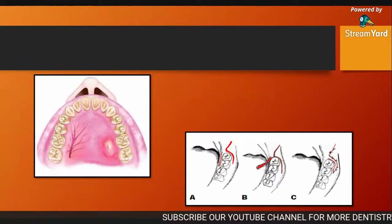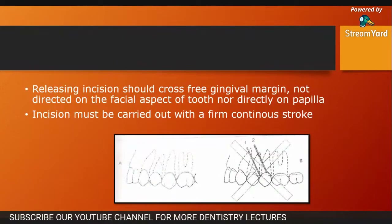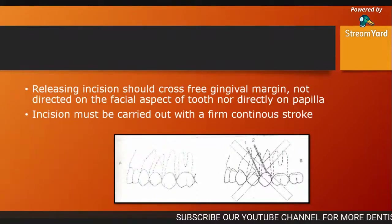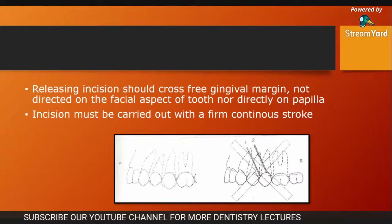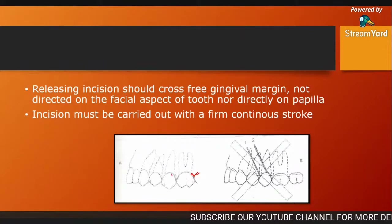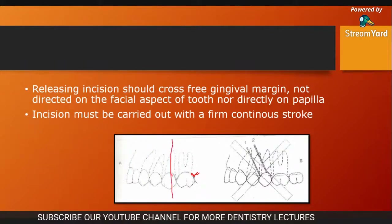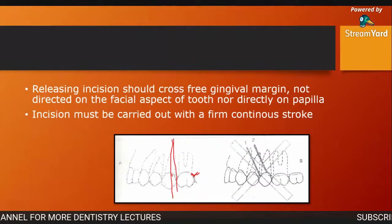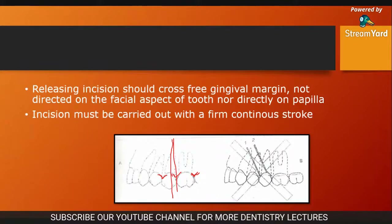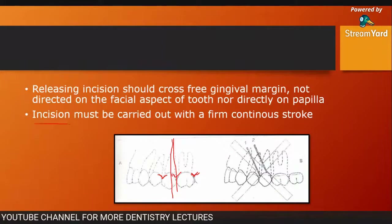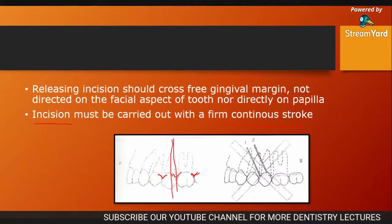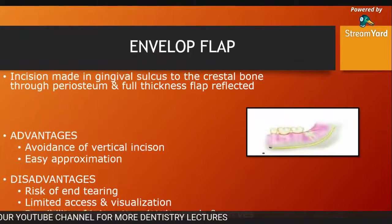The releasing incision should cross the free gingival margin — not directed on the facial aspect of the tooth and not directly on the papilla. You always give the releasing incision along the free gingival margins. The incision must be carried out with a firm continuous stroke. Your hand should always be firm and you always give a firm continuous stroke with a single incision — that will heal better and leave less scar.